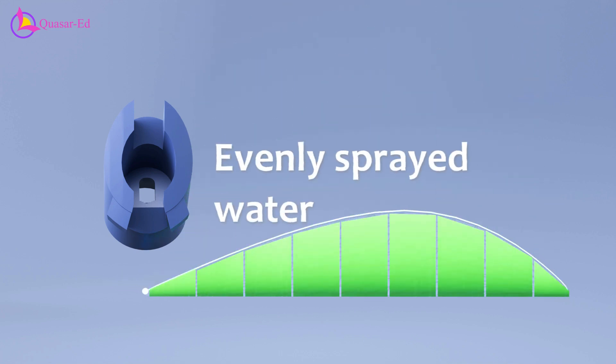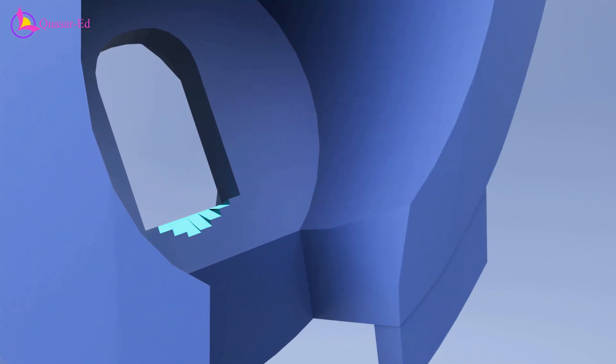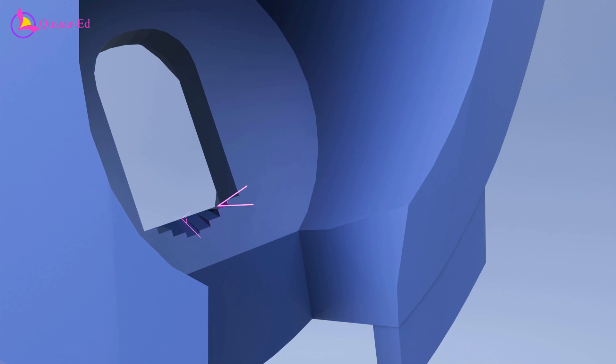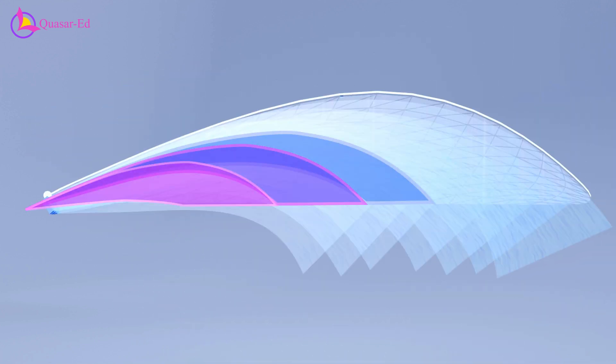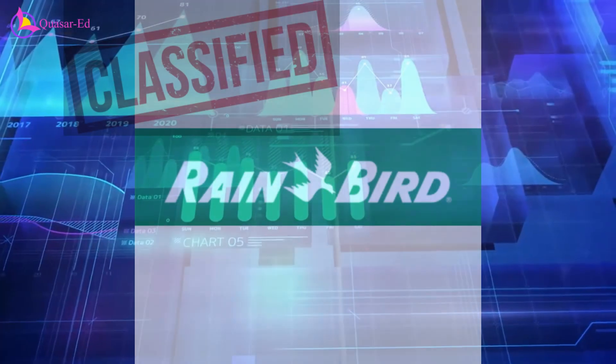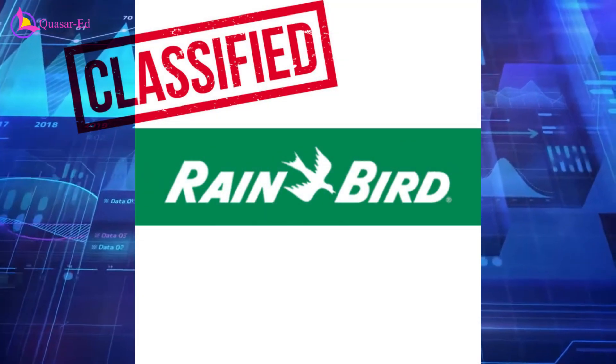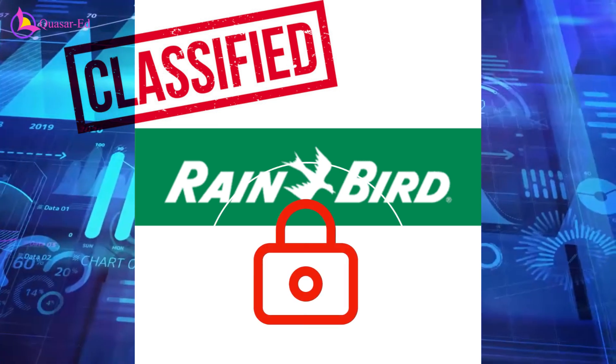The unique aspect of these rain curtain nozzles is their ability to spray water evenly throughout the arc. A closer look reveals tiny angle steps on the nozzle—higher angles in the middle and lower angles on the sides. This design allows the nozzle to function like a series of rectangular nozzles, each covering different parts of the arc from nearest to farthest. There are many advanced technologies and principles behind Rainbird's rain curtain technology that are not publicly accessible.